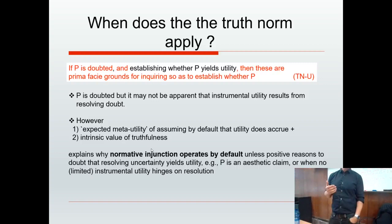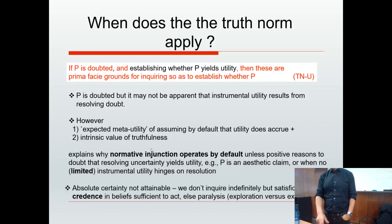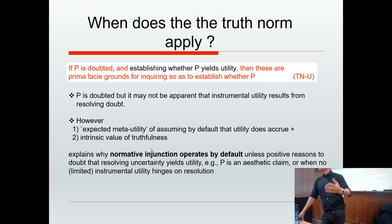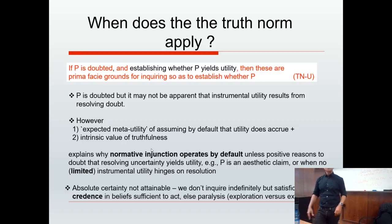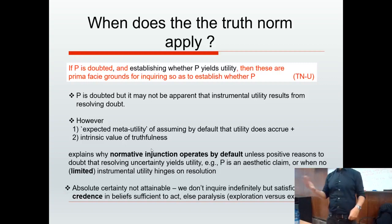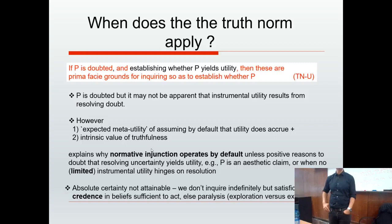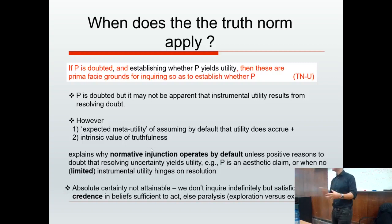The norm might be switched off when there's only limited instrumental utility in view, or when P is an aesthetic claim or expression of preference. If you were to blindly abide by this norm, you'd be inquiring forever — when do you ever have absolute certainty? We don't inquire indefinitely but satisfice. Sufficient credence: I've inquired sufficiently so I can confidently act. We can bring in Ramsey's subjective probabilities here — Ramsey was very much influenced by C.S. Peirce. In classical computer science, this is the classic exploration versus exploitation dilemma: when do you actually act rather than just keep inquiring?